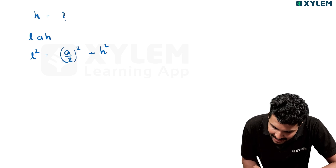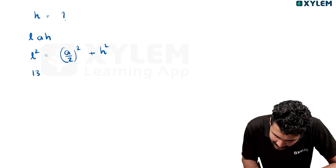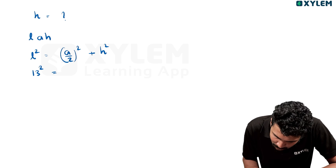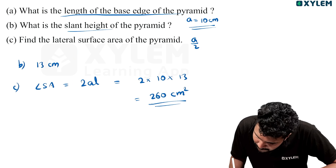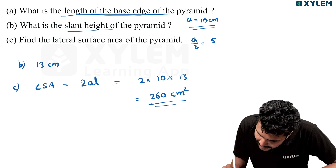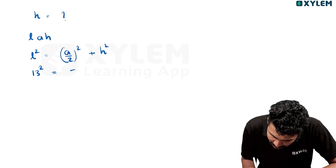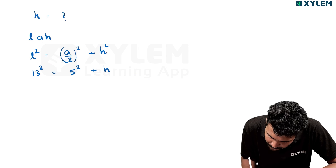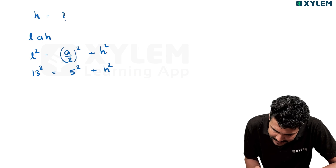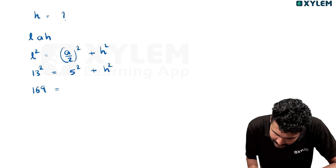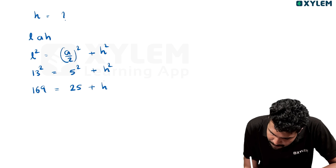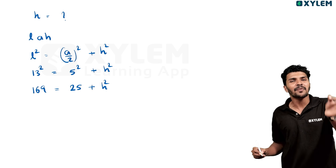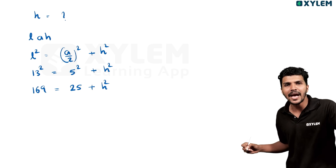L is 13. A is 10. A divided by 2 is 5. So 13 squared is equal to 5 squared plus h squared. That is: 169 is equal to 25 plus h squared. It is very simple.